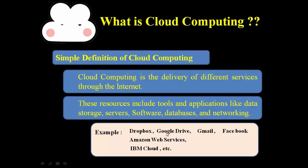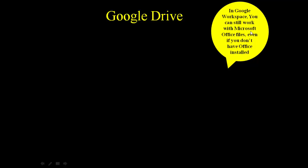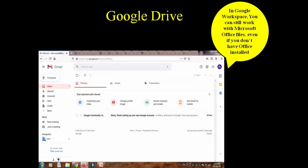Let us understand cloud with one basic example — Google Drive. Normally we are using Google Drive in our day-to-day life. In a Google Workspace you can still work with Microsoft Office files even if you don't have Office installed on your personal computer. Still you can use Excel, PowerPoint, Word, etc. That is possible because of Google Drive. So through Google Drive we can use Microsoft Office without installing it inside our PC. How is it possible? You have to just open a browser and open your Gmail account. In your Gmail account there is one symbol you have to click.